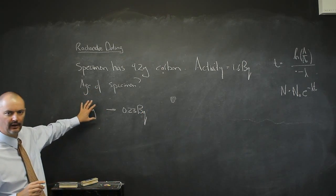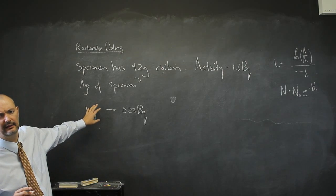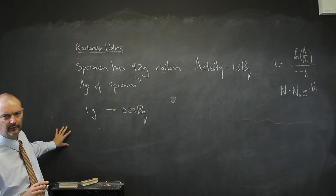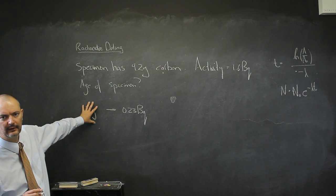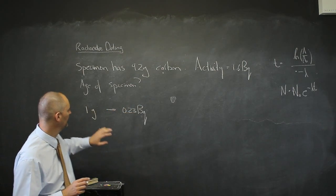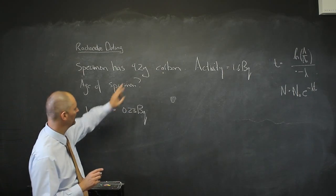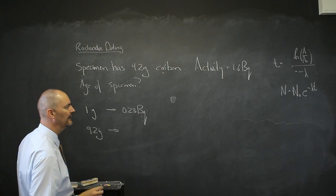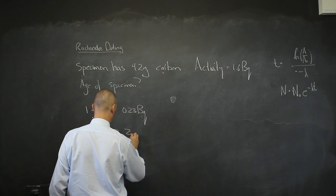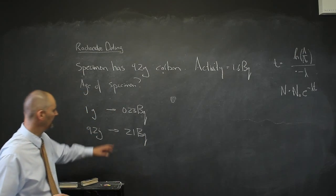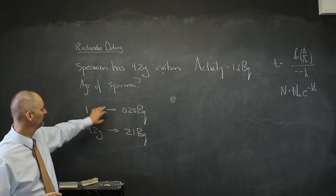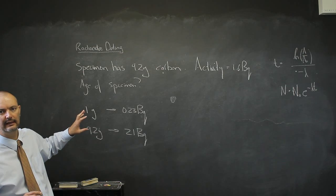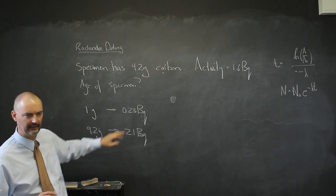Remember, we took 1 gram of carbon. We said it was 8.3 times 10^11 carbon-12 to 1 carbon-14, and we worked out what would be in 1 gram of a sample, how many there would be, and we worked out its activity. So in a 1 gram specimen we get 0.23 becquerel. What are we going to get in a 9.2 gram specimen? We'll get this divided by this times that, which gives me 2.1 becquerel. Don't get confused—that 0.23 is per 1 gram. If I had 2 grams, there would be double the amount of carbon-14s, so the activity would be double.